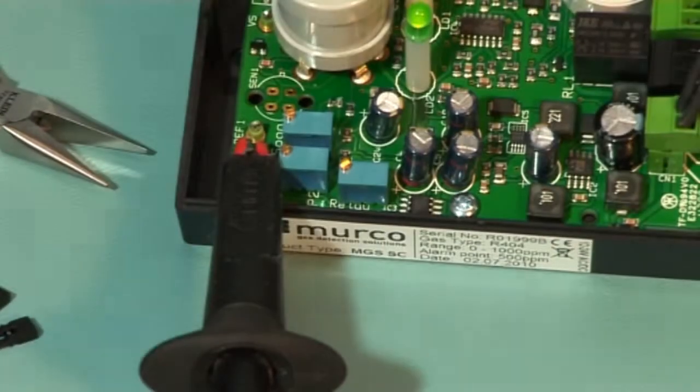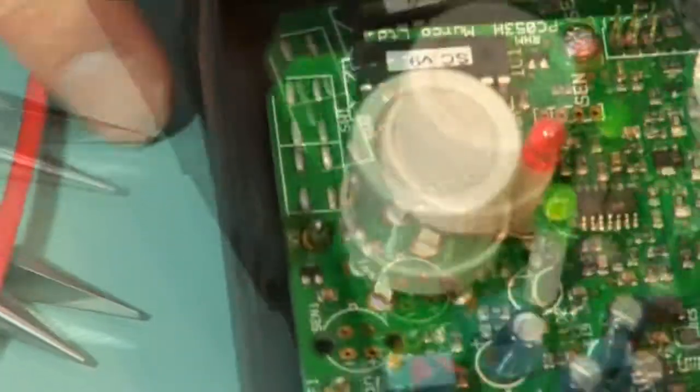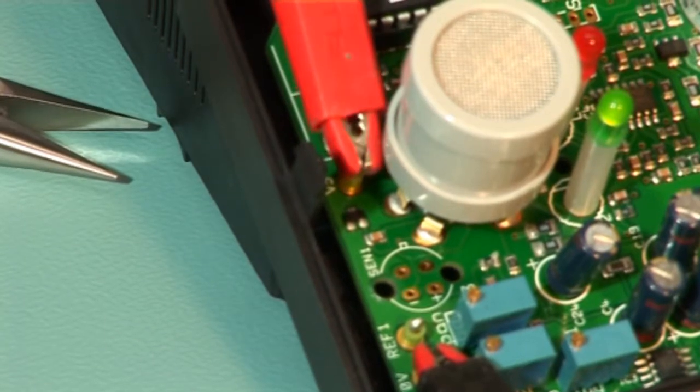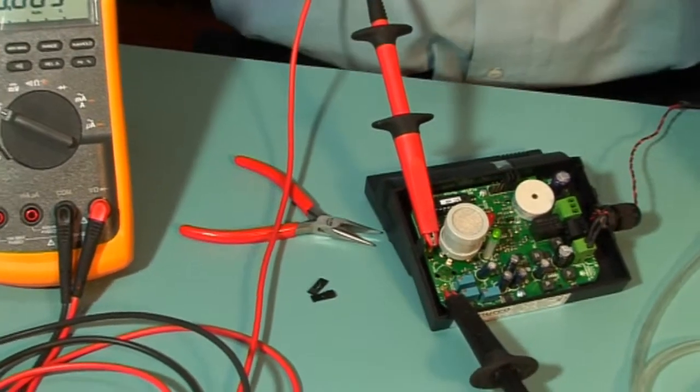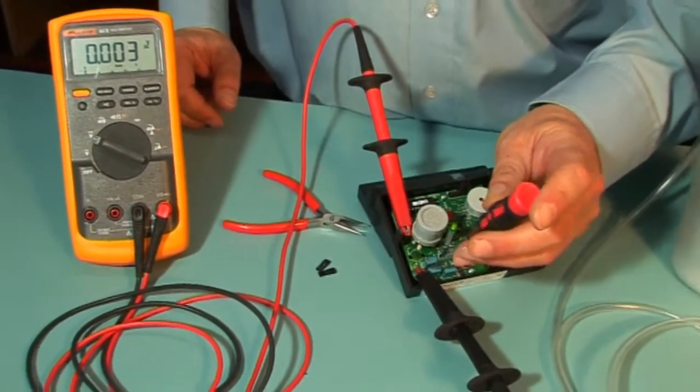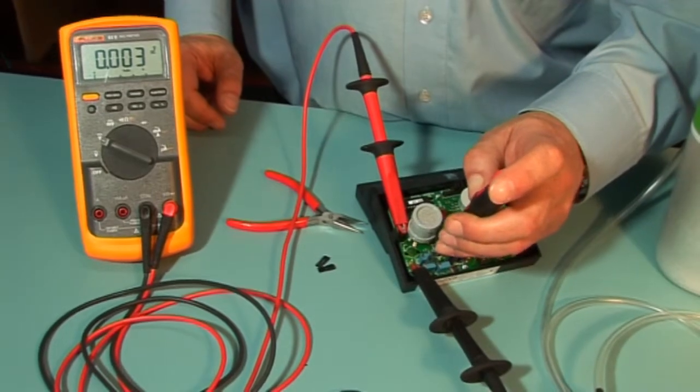Connect the voltmeter between V0 and VS and adjust P2 to 0 volts if in clean air. Once the sensor starts to see the gas, this voltage should increase.